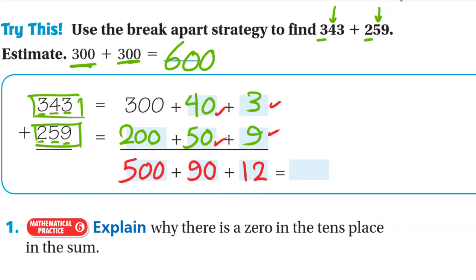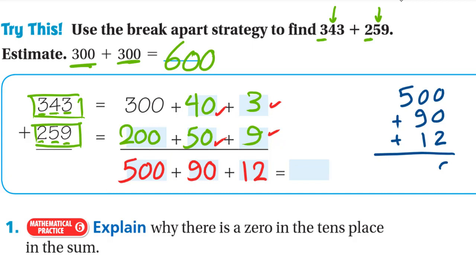Now add all three parts: 500 plus 90 plus 12. Zero plus zero plus 2 is 2; zero plus 9 plus 1 (regrouped) is 10 — write 0 and carry 1; 1 plus 5 is 6. So our answer is 602.